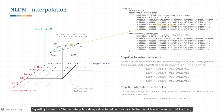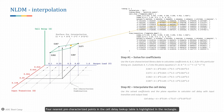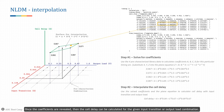Regarding how the STA tool interpolates delay values based on pre-characterized input transition and output load pairs: let's say we are given an input transition of 0.09 and output load of 0.67. The four nearest pre-characterized points in the cell delay lookup table are highlighted. In a three-dimensional graph, the cell delay values of these four points form a plane modeled by: Z = A + BX + CY + DXY. To interpolate the corresponding cell delay, the first step is to solve the hidden coefficients A, B, C, and D by substituting the data points into the equation. Once the coefficients are revealed, the cell delay can be calculated for the given input transition and output load combination.